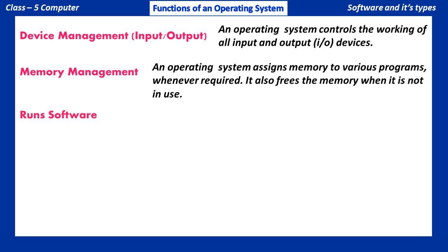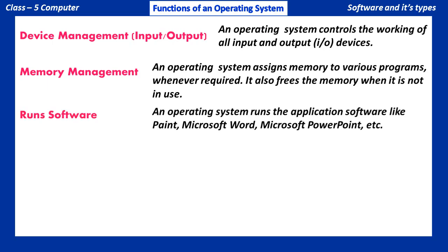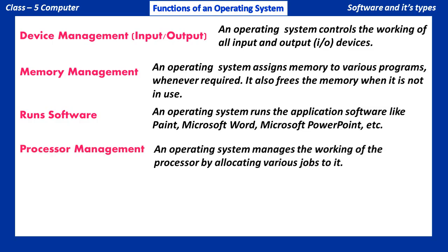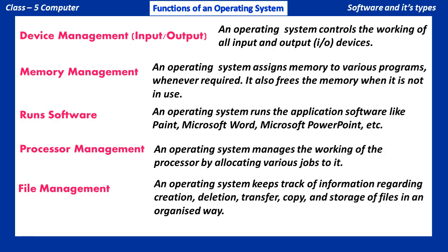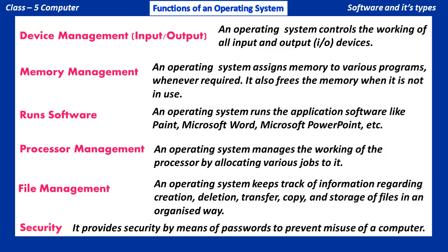Runs Software: An operating system runs application software like Paint, Microsoft Word, Microsoft PowerPoint, etc. Processor Management: An operating system manages the working of the processor by allocating various jobs to it. File Management: An operating system keeps track of information regarding creation, deletion, transfer, copy, and storage of files in an organized way. Security: It provides security by means of passwords to prevent misuse of a computer.